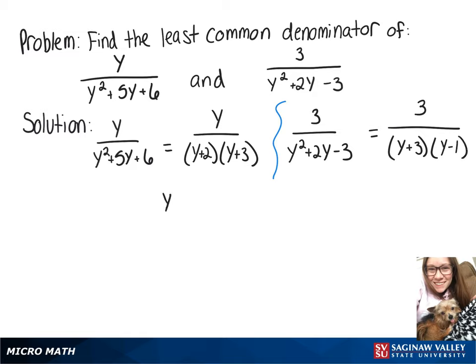So to bring those side by side to compare them, we now have y over y plus 2 times y plus 3, and 3 over y plus 3 times y minus 1.